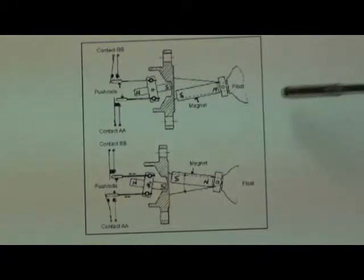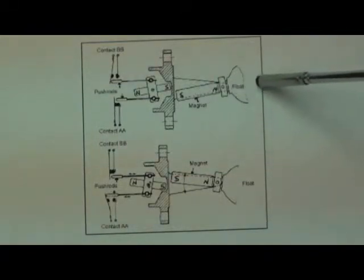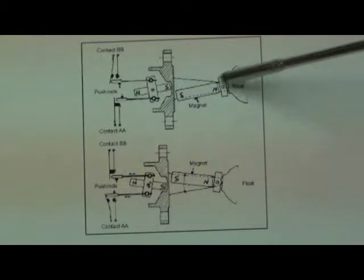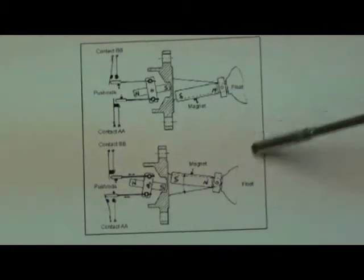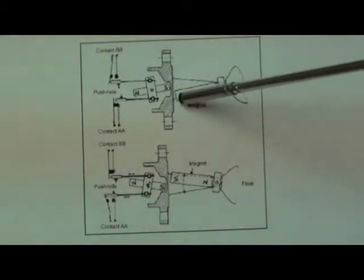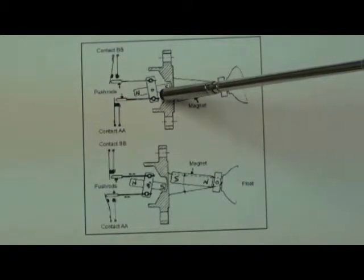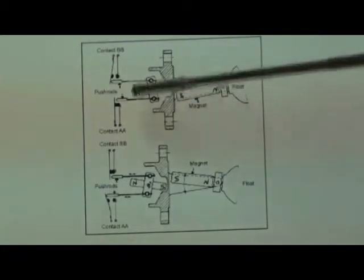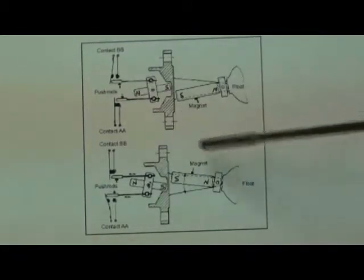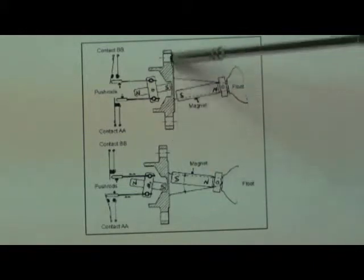Consequently, a change in liquid level - here you can see the float in the high level position. As that falls, this magnetic pole will face directly the same pole in the switch head mechanism through a non-magnetic diaphragm here.